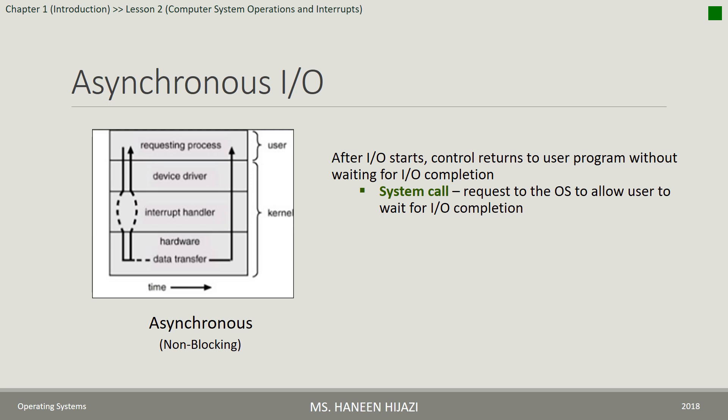في الـ Asynchronous Input-Output، لما البروسس تعمل Input-Output Request ما بتستنى. بيرجعلها الـ Control مباشرة بعد الـ Request وبتكمل شغلها أثناء الـ Data Transfer. بس يخلص ويصير الـ Interrupt بتوقف البروسس وتعمل Handling للـ Interrupt وبتكمل شغلها. ممكن البروسس تعمل أكثر من Input-Output Request بنفس الوقت. إذا كان الـ Request الجديد على نفس الـ Device، بينحط في Waiting Queue تبع الـ Device. إذا بدي البروسس تستنى بخليها تستخدم Wait System Call.